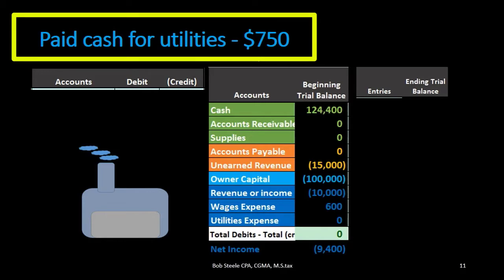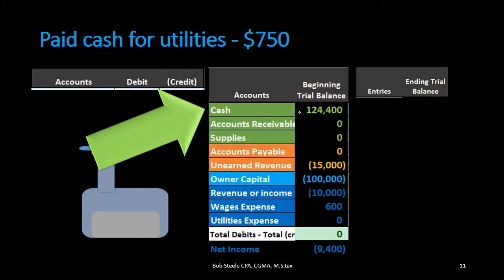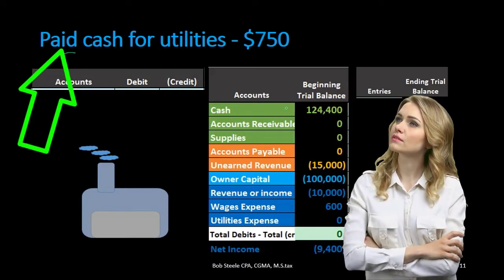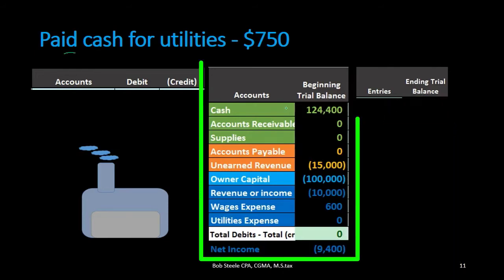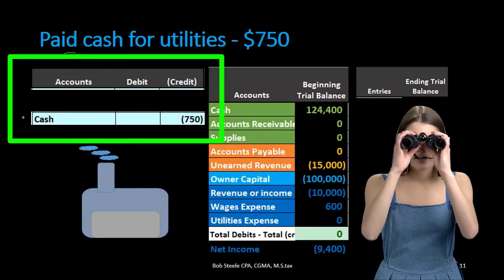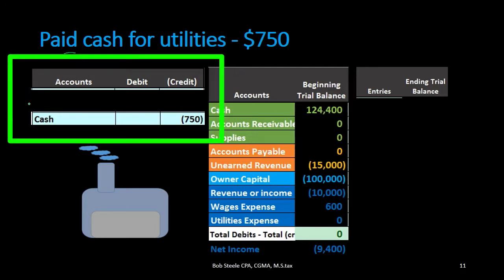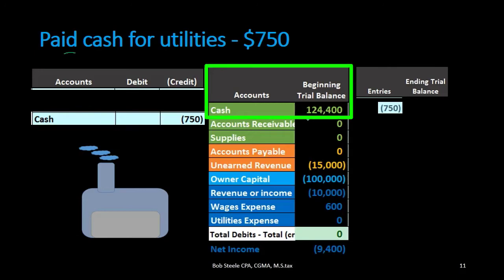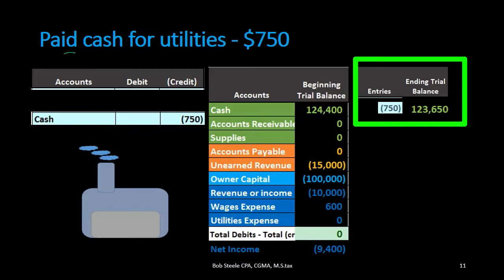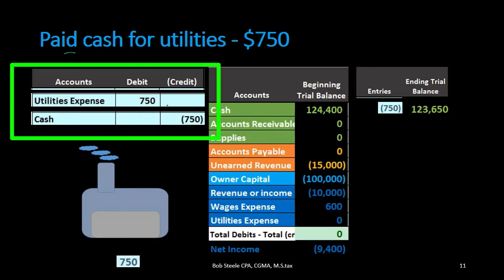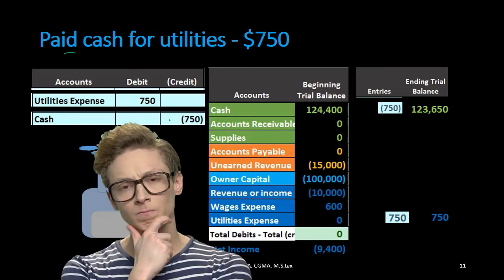Next transaction: paid cash for utilities — 750 dollars. First question: is cash affected? Yes. Is it going up or down? It's going down — keywords 'paid cash.' Cash has a debit normal balance, so to make it go down we do the opposite: a credit. We start with the credit to cash, putting it on the bottom. Posting that out, we bring the cash balance from a debit of 124,400 minus the credit of 750 to 123,650.